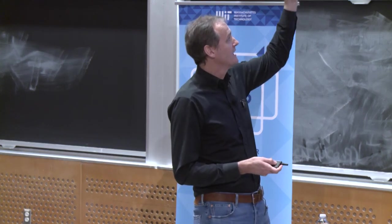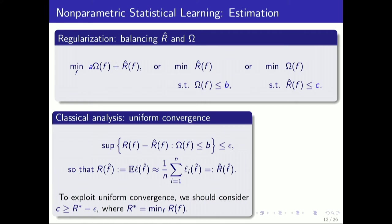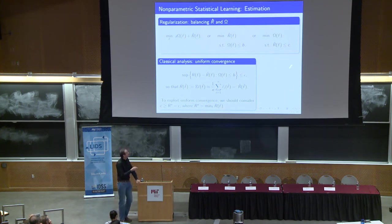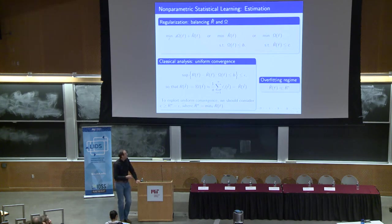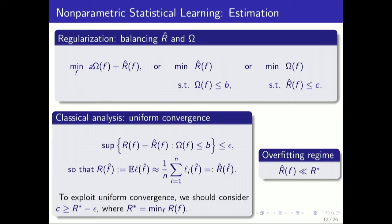But it's clear from this that we should be, if we want to use this sort of argument, considering the bound on the empirical risk that's not much better than the best we could hope for. We should certainly have this C defining our bound on the empirical risk, at least as big as the base risk R*, the best possible. That's obvious. If we have the empirical risk of the function much better than R*, than the base risk, the best possible, then we're in an overfitting regime. We're certainly fitting better than we should hope to. We can't possibly have uniform convergence applying there.